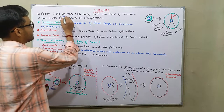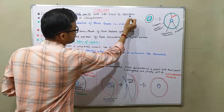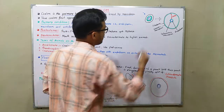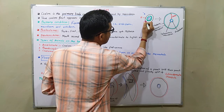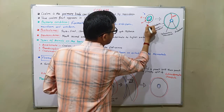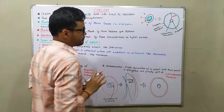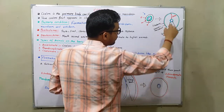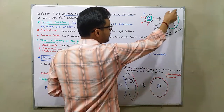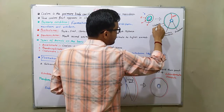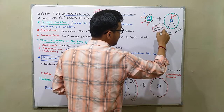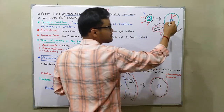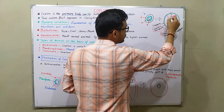Coelom is a primary body cavity, both sides lined by mesoderm. If you observe the image here, three germ layers are present: ectoderm, mesoderm, and endoderm. When mesoderm splits, one portion lines the endoderm — that is called splanchnic mesoderm — and when another portion attaches with the ectoderm, it is known as somatic mesoderm. The gap between those two mesoderms is the coelom.